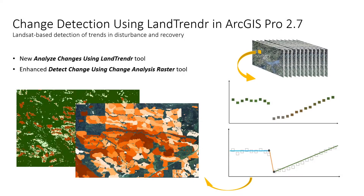Rho 2.7 supports a new change detection algorithm called the LandTrendr. The goal is to extract information on how a feature in the landscape has changed due to disturbances such as logging, fire, insects, and so on.